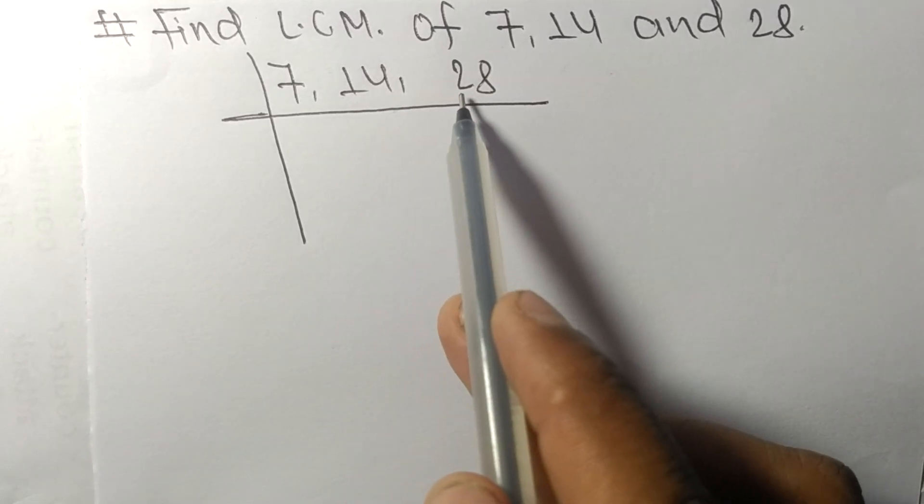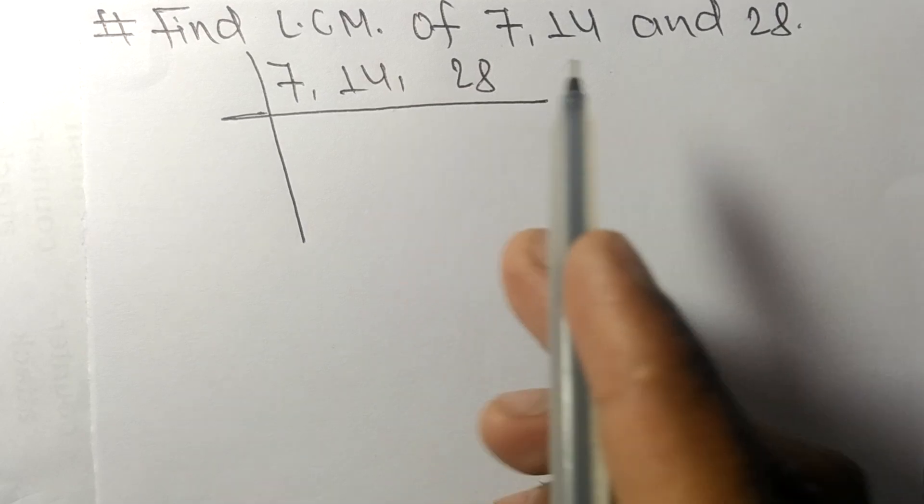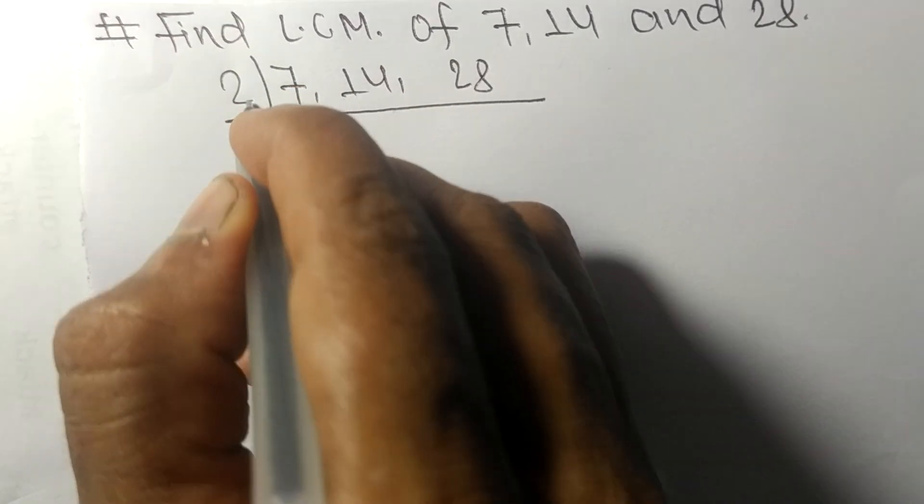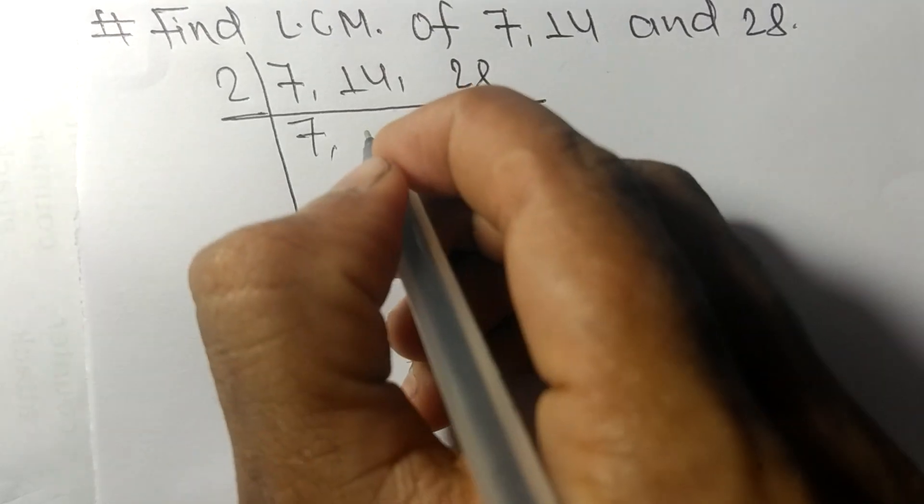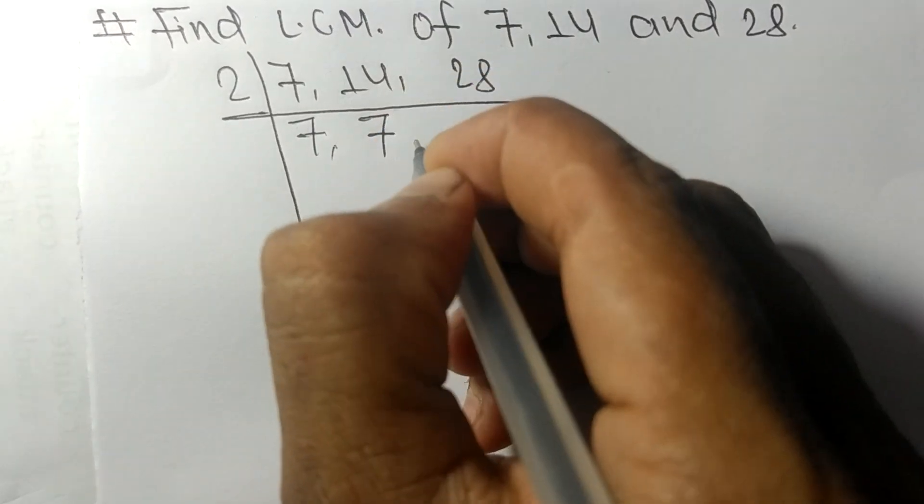14 and 28 are exactly divisible by 2. 7 is not divisible, so it remains 7. 2 times 7 equals 14, 2 times 14 equals 28.